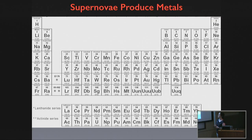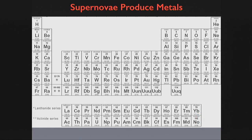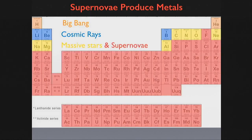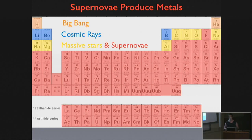The second way supernovae are very important is that they produce and distribute most of the metals in the periodic table. Hydrogen and helium are produced predominantly through the Big Bang. Lithium, beryllium, and boron are produced by cosmic ray spallation — cosmic rays going through the interstellar medium, bombarding heavier elements like oxygen and knocking protons off. Basically everything else in the periodic table above boron is either produced in the cores of massive stars — carbon, nitrogen, oxygen, neon — or essentially all the rest are produced in the explosive nucleosynthesis that occurs in the seconds after a supernova explosion. So everything we have on Earth that is part of the periodic table comes from or has been in the center of a massive star.